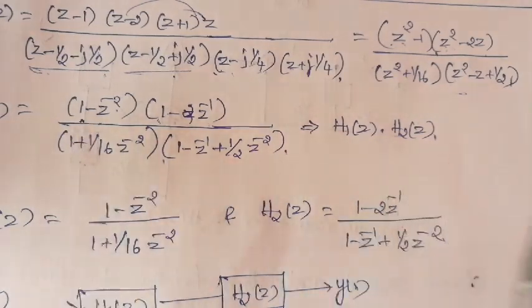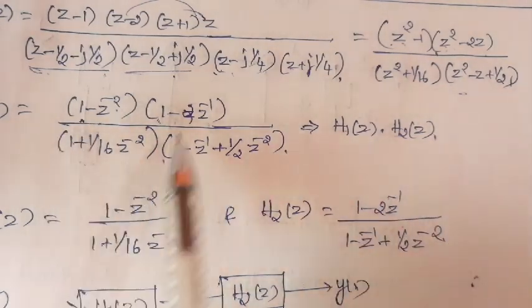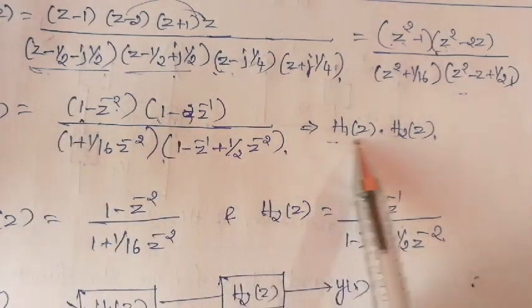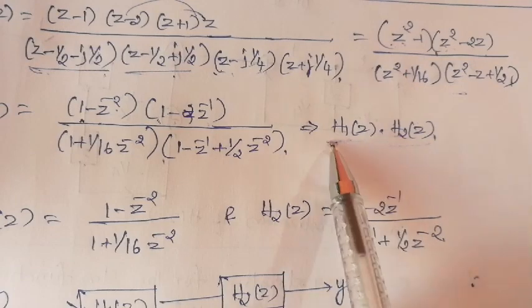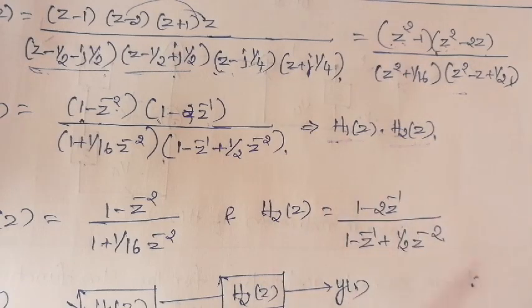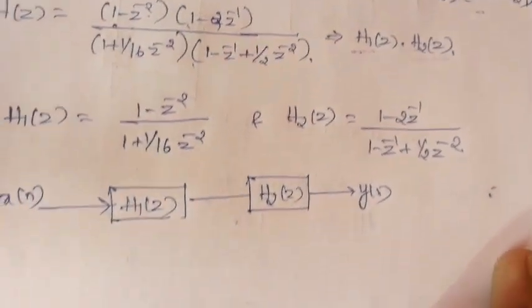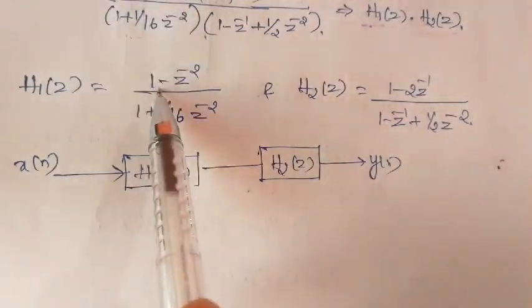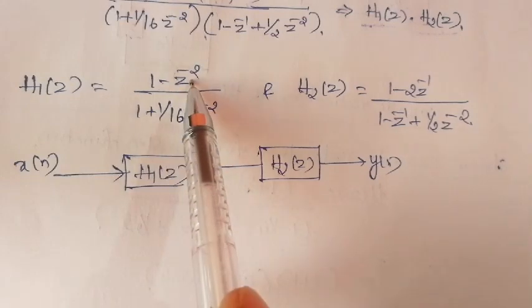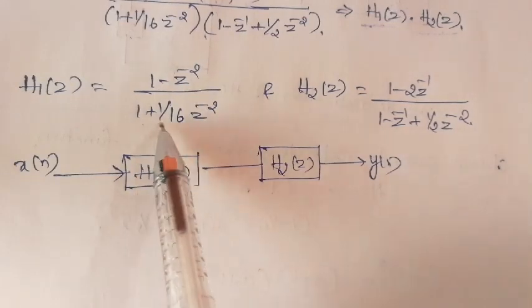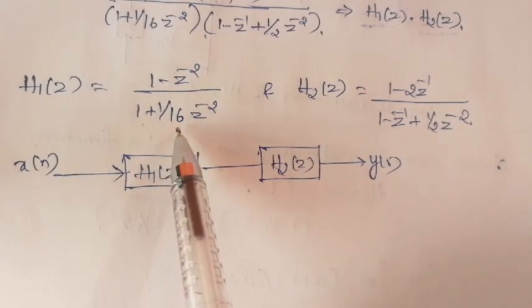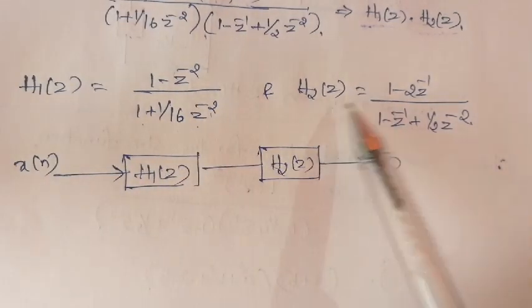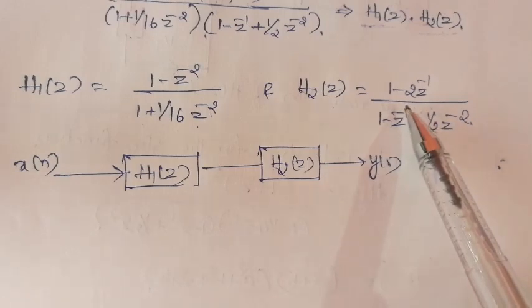Now I am going to split into two transfer functions H1 of z and H2 of z. H1 of z equals 1 minus z to the power minus 2, divided by 1 plus 1/16 times z to the power minus 2. H2 of z equals 1 minus z to the power minus 2, divided by its corresponding denominator.